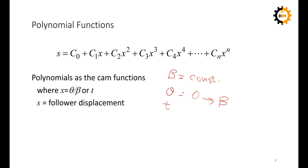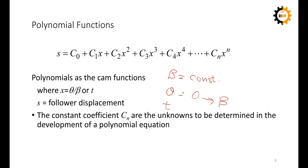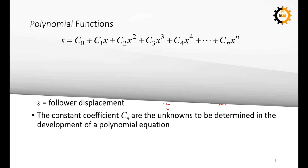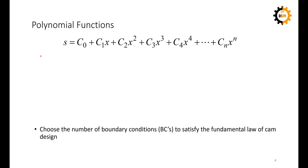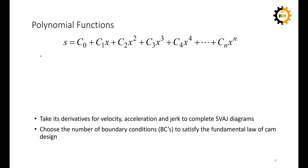The coefficients c₁, c₂, c₃, etc. are determined using the boundary conditions. Taking the general form of the polynomial with boundary conditions defined by the design criteria, we apply the fundamental law of cam design to establish those boundary conditions and substitute them into the equations. Since displacement is given, we take its derivatives to obtain velocity, acceleration, and jerk.